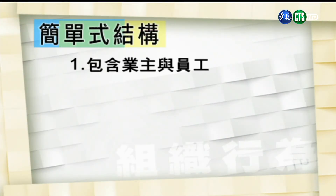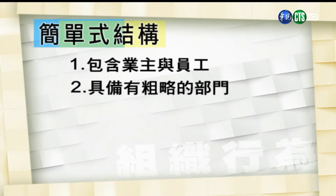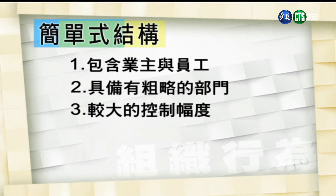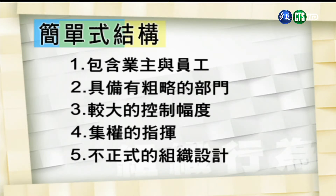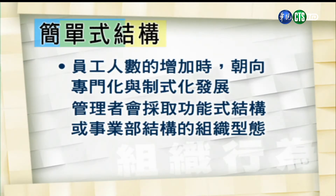第一个，所谓简单的结构是指一个组织里面只有老板跟员工的组织，它已经具备有粗略的部门，以及较大的控制幅度、集权的指挥，以及不正式的组织设计。随着员工人数增加，慢慢地简单式结构会朝向专门化以及知识化的发展，使组织能够走向官僚化。